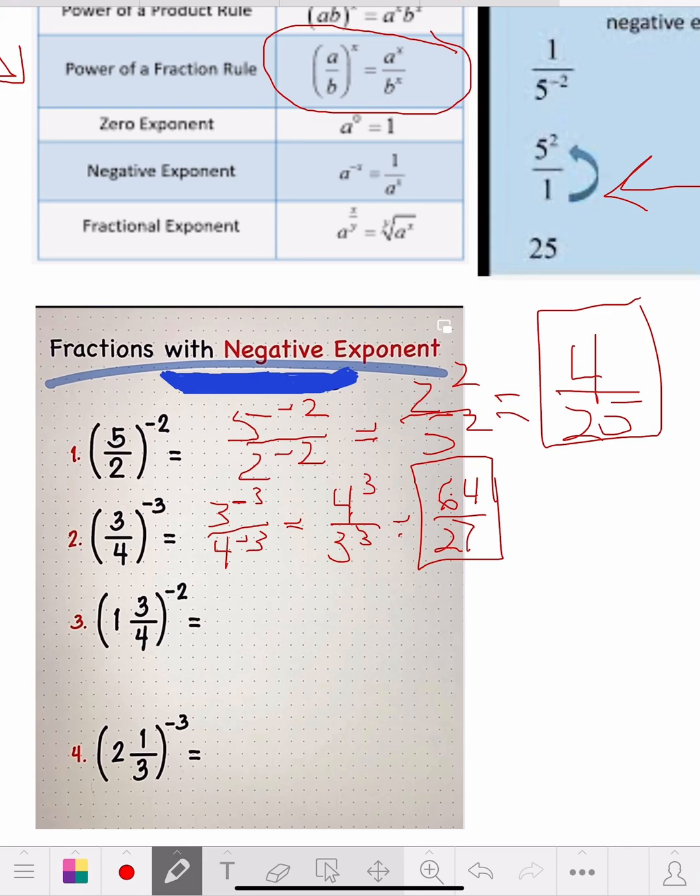Now on the next one, number 3, this is a mixed fraction. So what do you do here? Remember that? We did this in a couple other exercises. You multiply the 4 times the 1 is 4 plus the 3 is 7. So you get 7 fourths, 7 fourths. You can leave this in the brackets just so you can see it as negative 2.